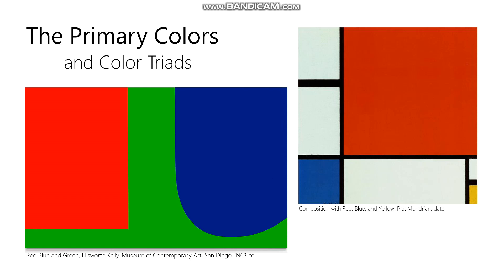Both of those are forms of what are called color triads — any kind of system where you have three main colors that are evenly spaced apart from each other. When that's the main organization of color in a painting or a work of art, that's called a triad.